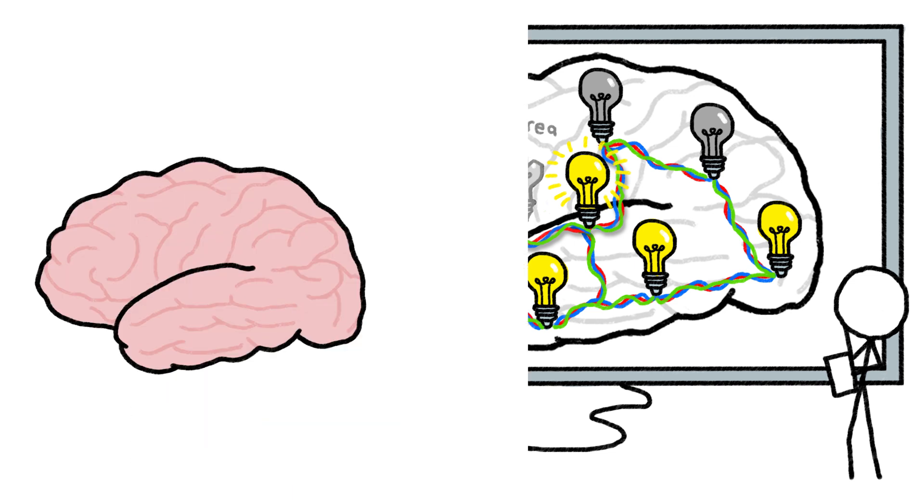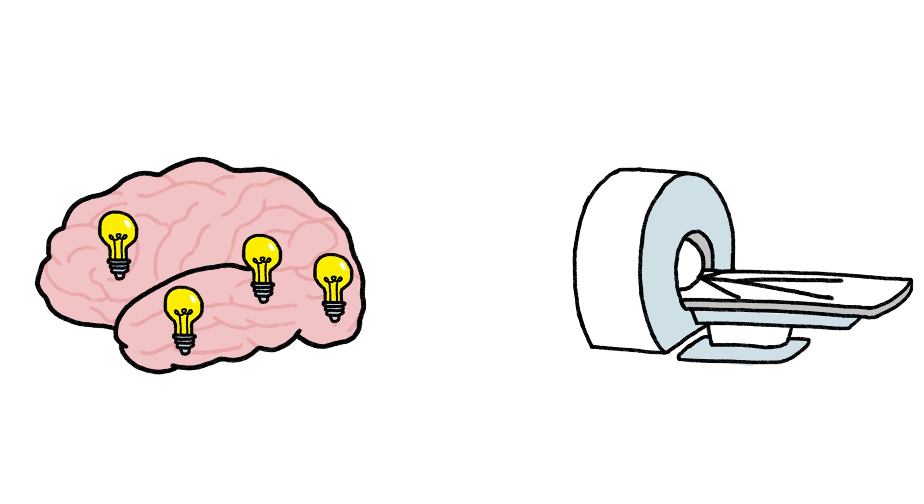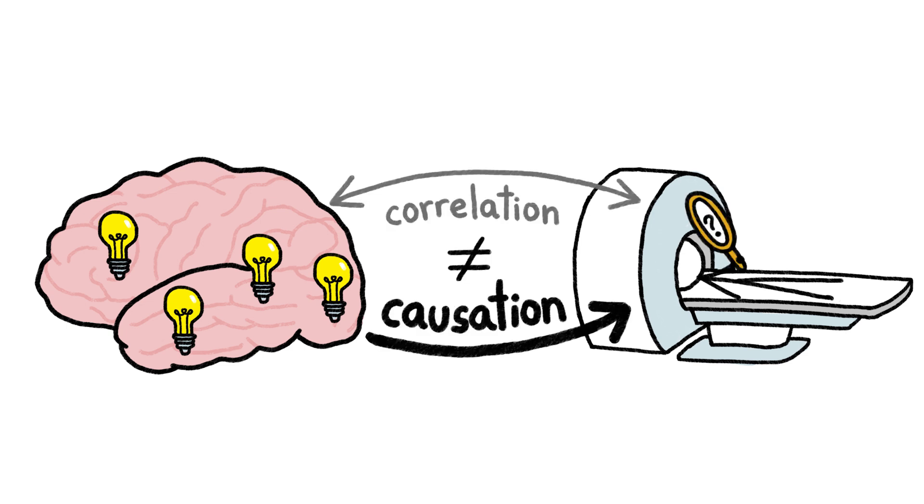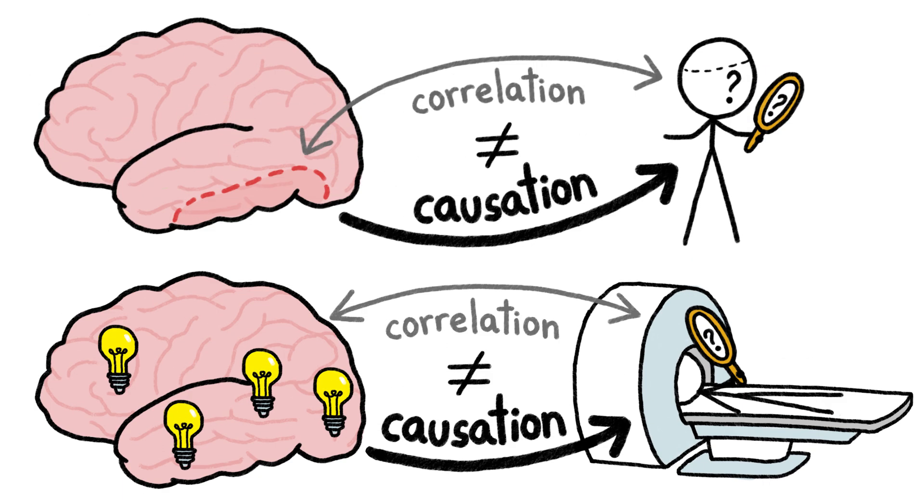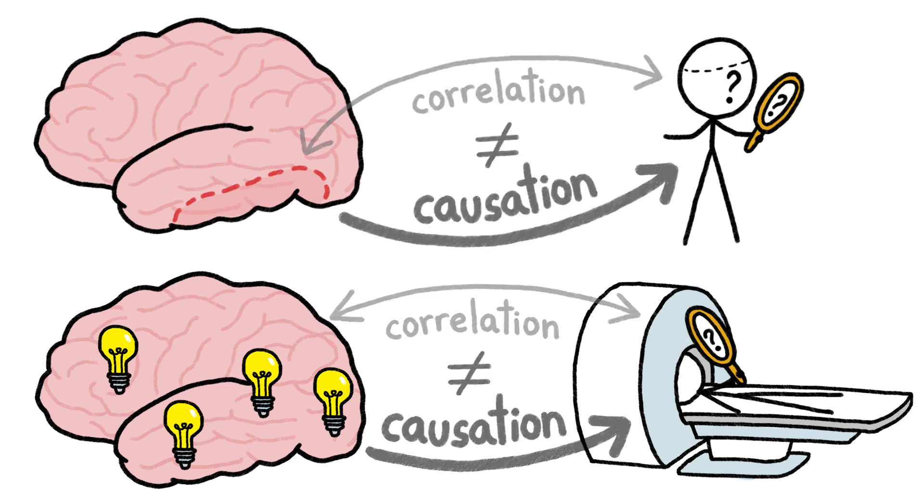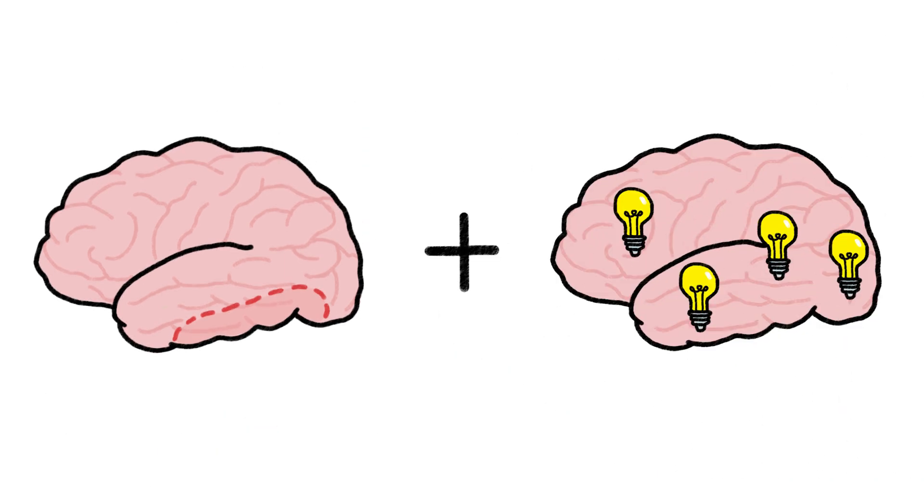But again, just because a certain part of the brain lights up during a certain mental task doesn't necessarily mean that part of the brain is doing something critical to that task. In other words, the MRI method of brain imaging turned out to have the same problem as the lesion method. Fortunately, we can get around this problem by putting the two methods together.